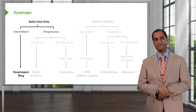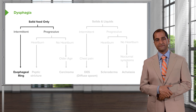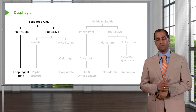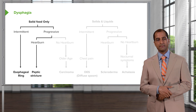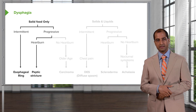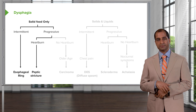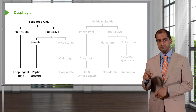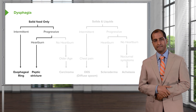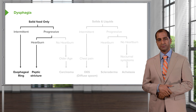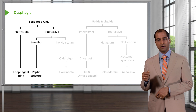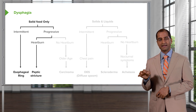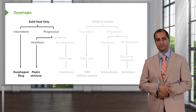Now, if it's progressive and the patient is also feeling heartburn, you should be thinking about peptic strictures. A peptic stricture is different from a ring, because the stricture represents hardening that was taking place in the esophagus.